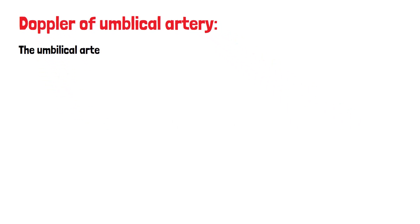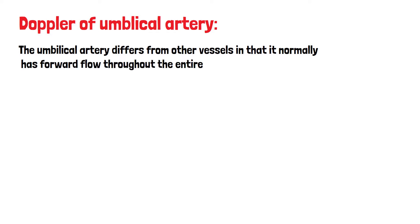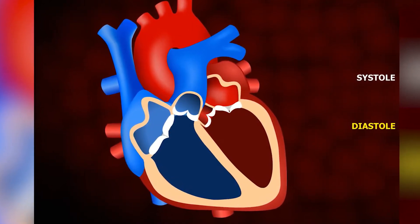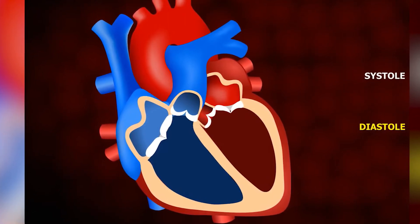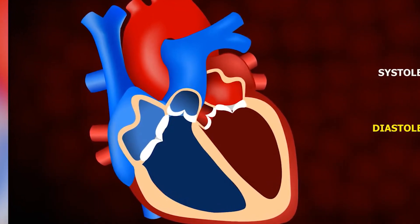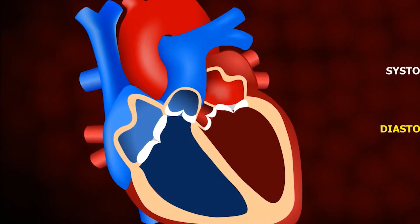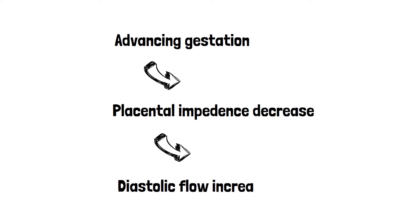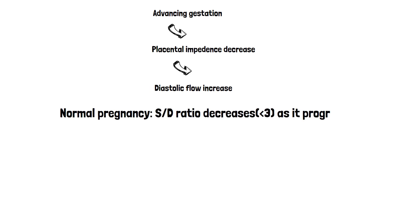Next is Doppler of the umbilical artery. The umbilical artery differs from other vessels in that it normally has forward flow throughout the entire cardiac cycle. During systole, the heart actively contracts; during diastole, the heart passively contracts. As gestation advances, placental impedance decreases and diastolic flow increases, because progesterone causes peripheral vascular resistance to decrease. Normally, systolic flow remains the same while diastolic flow increases, so the S/D ratio decreases to less than 3.